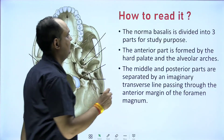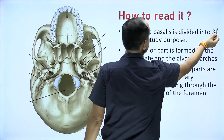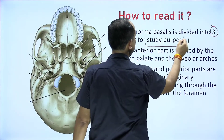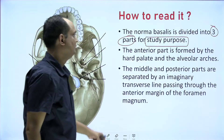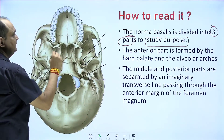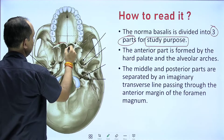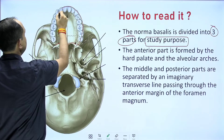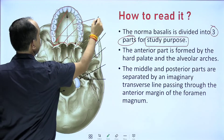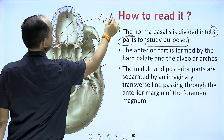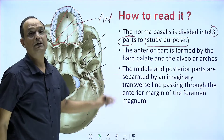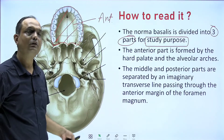For our convenience, we have divided norma basalis into three parts — these are purely for study purposes. The anterior part is formed by the hard palate and the alveolar arch. This area is known as the anterior part of norma basalis. Then we have the middle and posterior parts.